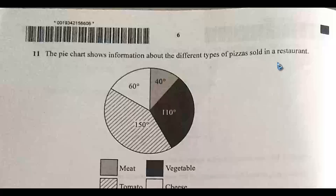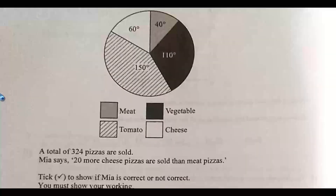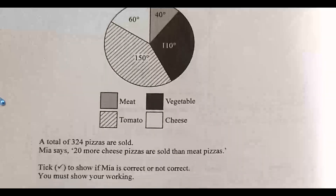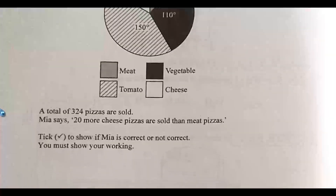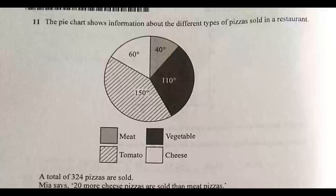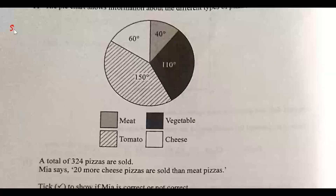Question 11: The pie chart shows information about different types of pizzas sold in a restaurant. A total of 324 pizzas are sold. Mia says 20 more cheese pizzas are sold than meat pizzas. Show whether Mia is correct or not, showing your working. First, calculate the number of cheese pizzas and meat pizzas respectively using the sectorial angle formula.